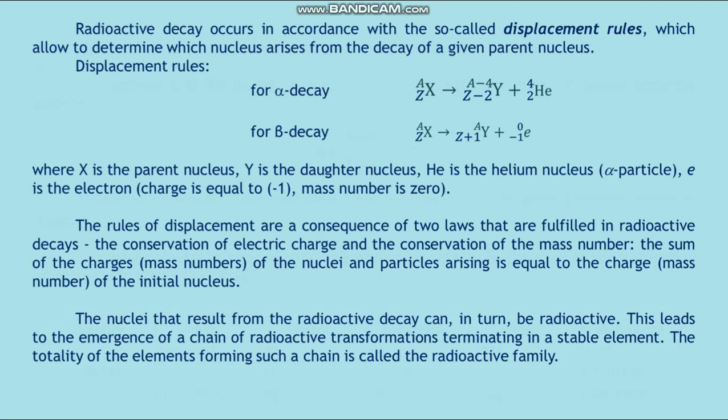Radioactive decay occurs in accordance with the so-called displacement rules, which allow to determine which nucleus arises from a decay of a given parent nucleus. Displacement rules: for alpha decay and for beta decay, where X is the parent nucleus, Y is the daughter nucleus, helium is a helium nucleus (alpha particle), and e is electron with charge equal to -1 and mass number 0. The rules of displacement are consequence of two laws that are fulfilled in the radioactive decays: the conservation of electric charge and the conservation of the mass number. The sum of the charges and mass numbers of the nuclei and particles arising is equal to the charge and mass number of the initial nucleus.